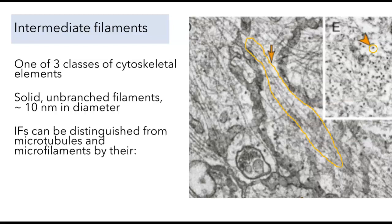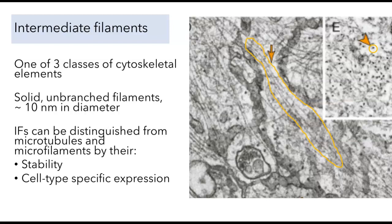Intermediate filaments can be distinguished from the other two cytoskeletal elements — microtubules and microfilaments — by a few characteristics. These are going to include their stability, their cell-type specific expression, and their mechanical properties. I want to walk you through those one by one, beginning with stability.